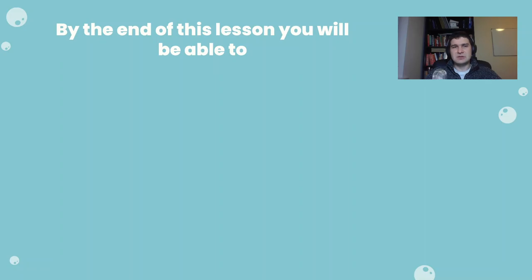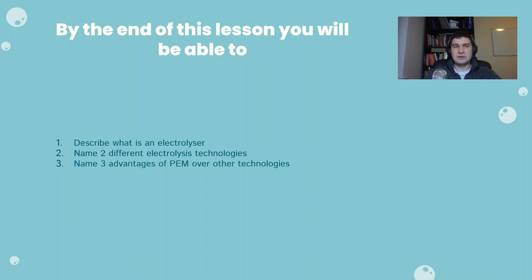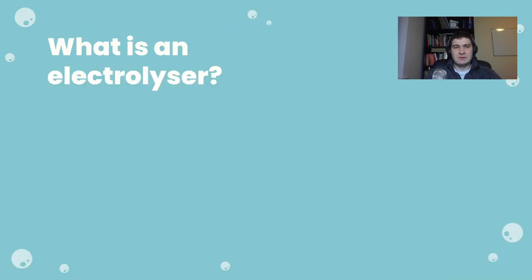By the end of this lesson you will be able to: number one, describe what is an electrolyzer; number two, name two different electrolysis technologies; number three, name three advantages of PEM over other electrolysis technologies; number four, describe the balance of plant system around PEM electrolysis.